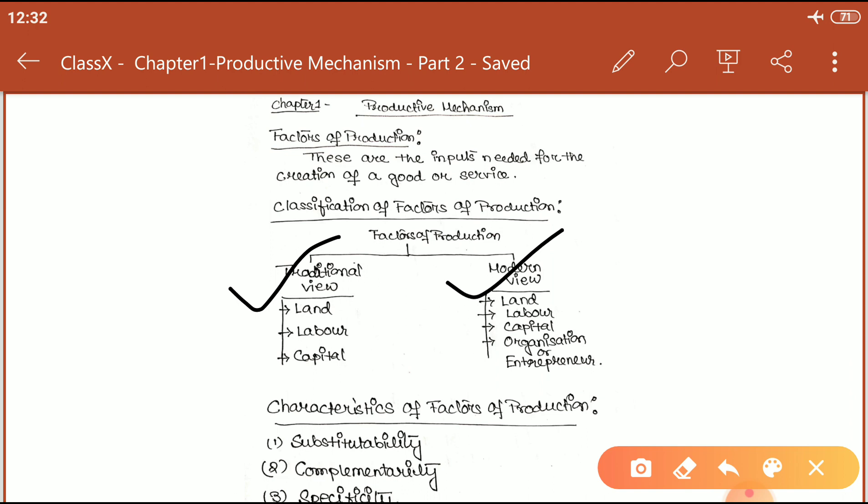According to some economists, land, labor, and capital are the main important factors of production, which means in order to run the production process in any country, in any field, we need these three inputs.